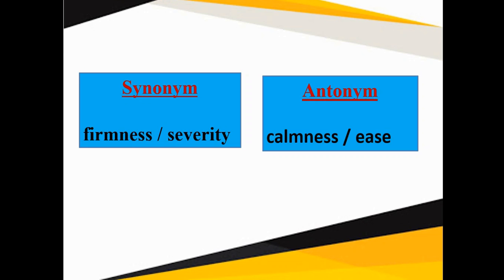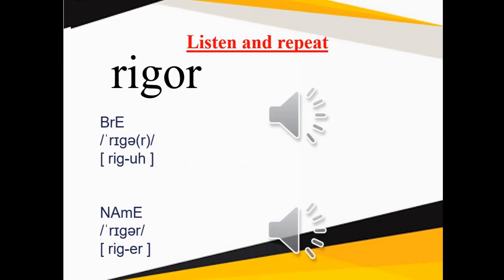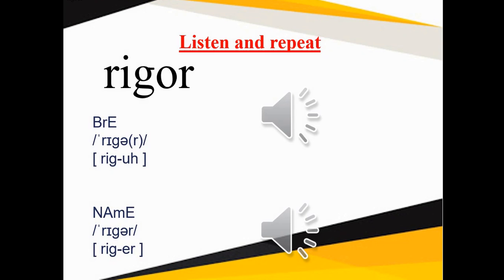Let's look at the pronunciation. So we have got British English pronunciation along with Native American English pronunciation. Remember it's very important to learn and practice pronunciation of the word. Now listen and repeat. Rigor, rigor. R is slightly silent. Rigor, rigor.